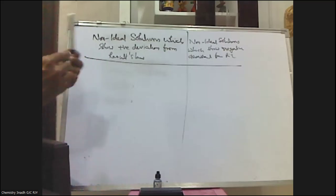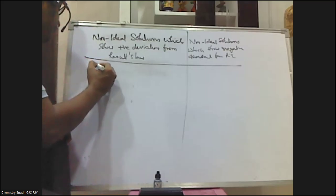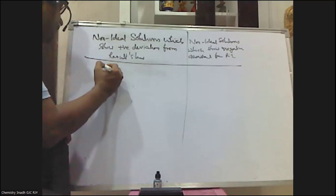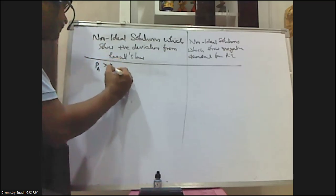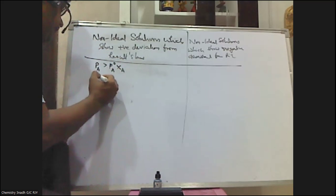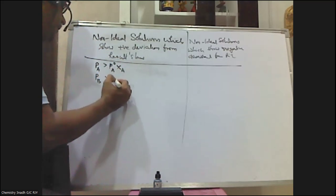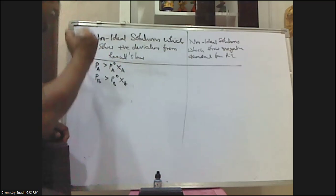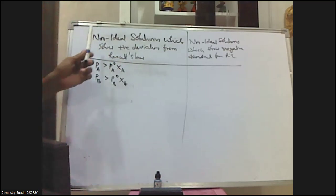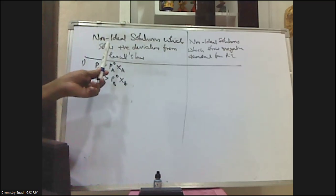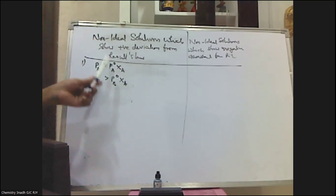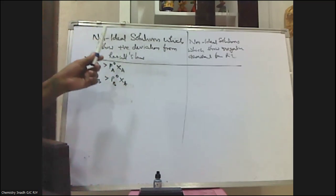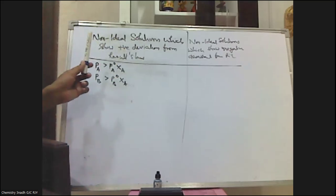What do you mean by positive deviation from Raoult's law? It means the experimentally determined partial vapor pressures are greater than those calculated by Raoult's law. In other words, the experimentally determined vapor pressures are always greater than the calculated values obtained by using Raoult's law.